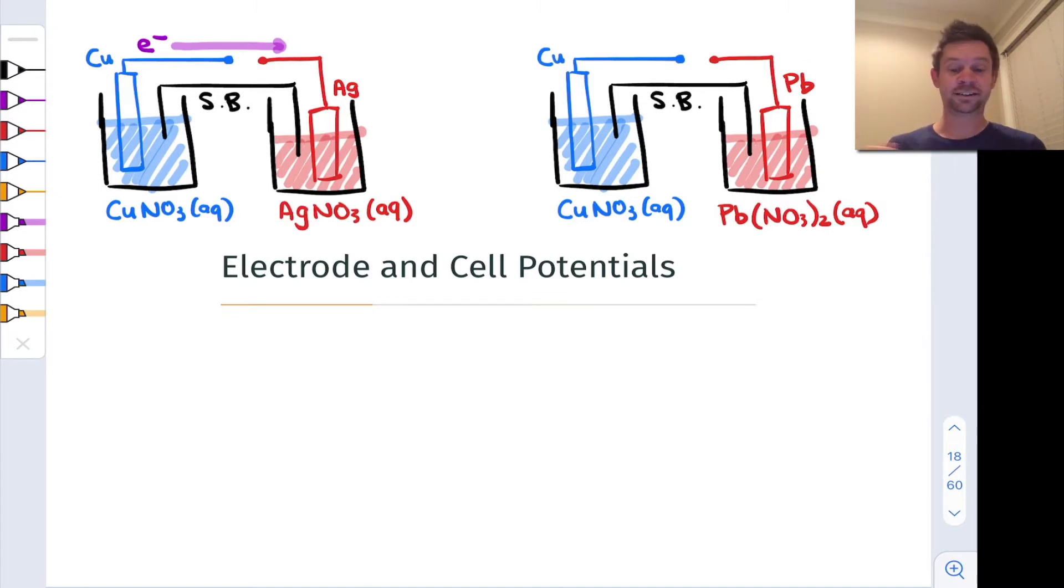So we set up a galvanic cell with a lead(II) nitrate solution and lead metal on one side, the side we want to be the cathode, and we set up our typical copper/copper(II) half cell on the left, and we want that to be the anode and we're trying to get electrons to flow from left to right like this.